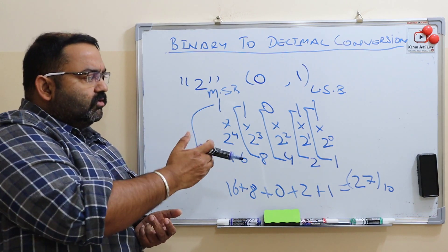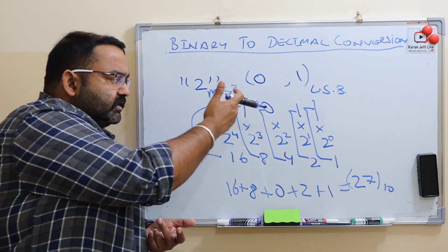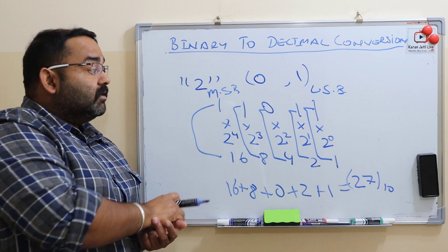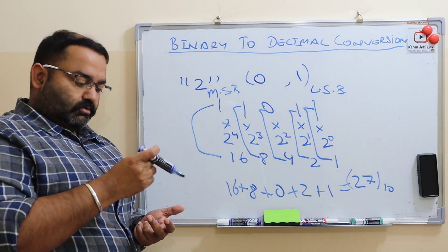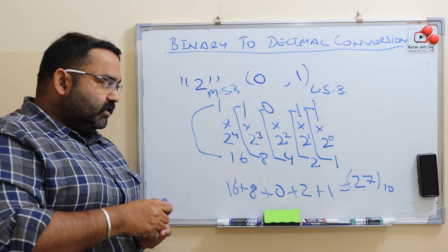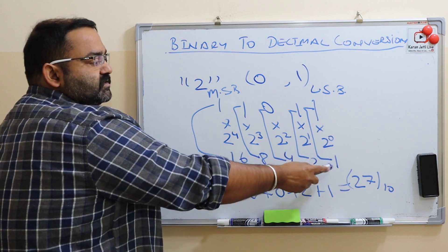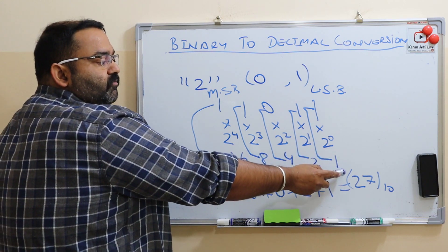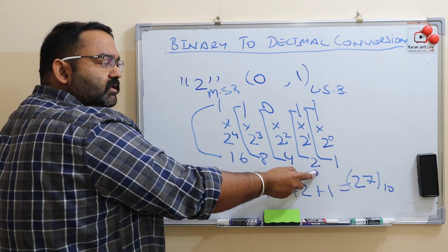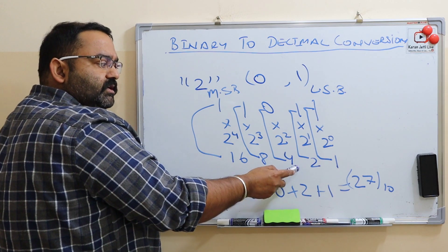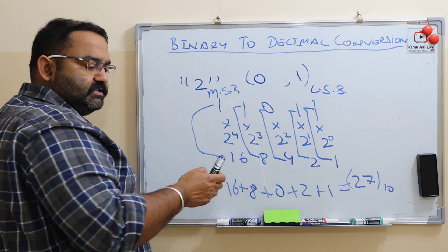So this is how we convert a binary number to decimal number. I call it a shortcut method, but you see it is not that short. But we can make it shorter. Just remember these numbers: start counting from 1, then double the 1 to get 2, double the 2 to get 4, double 4 to get 8, double 8 to get 16.